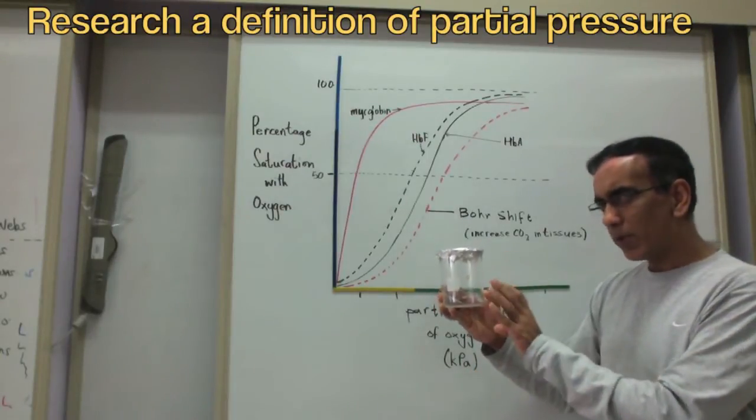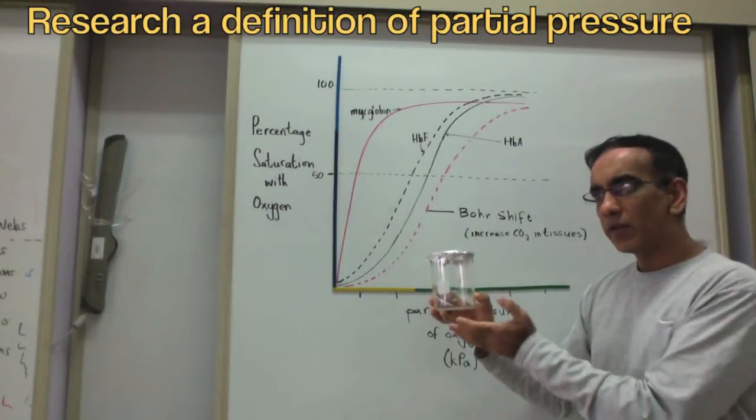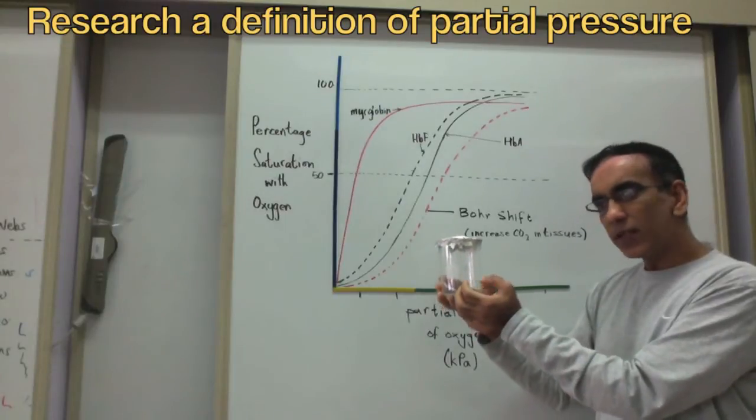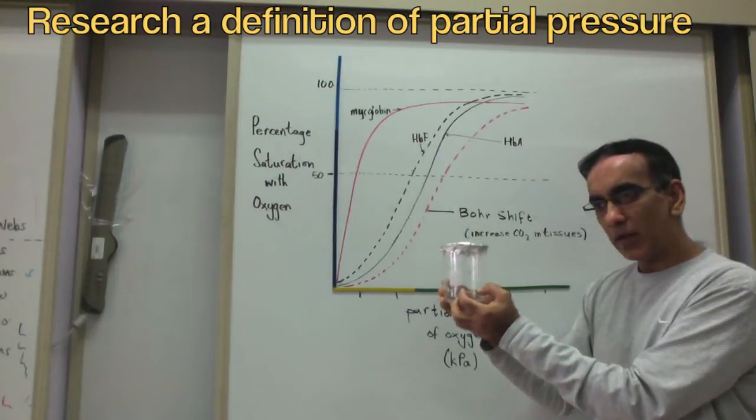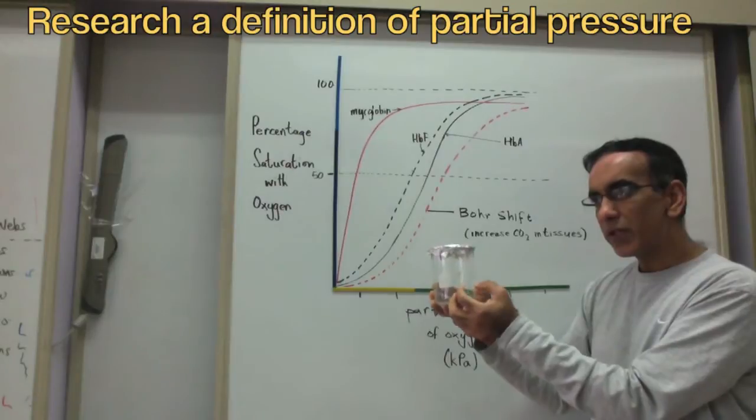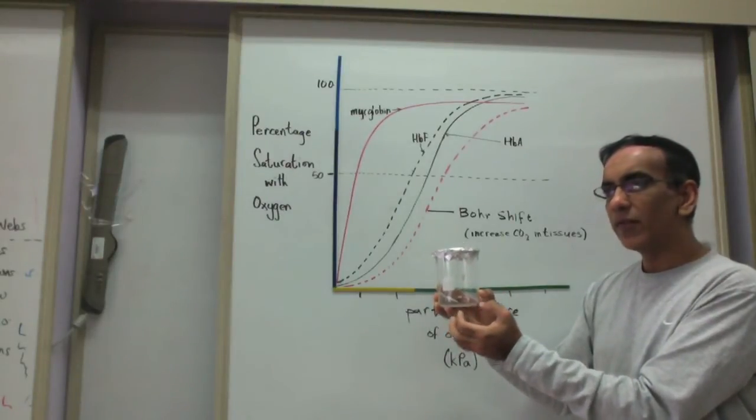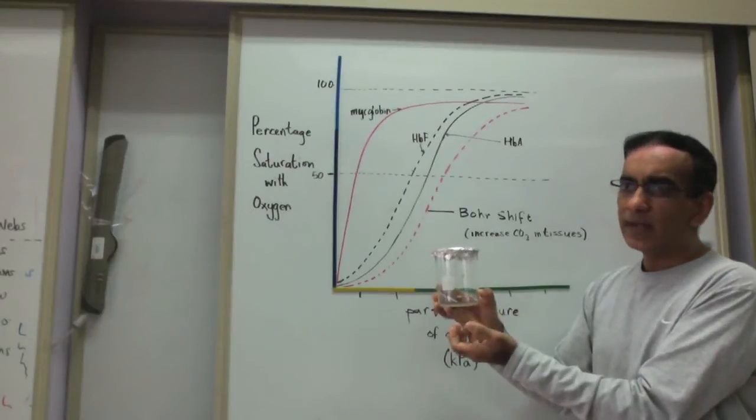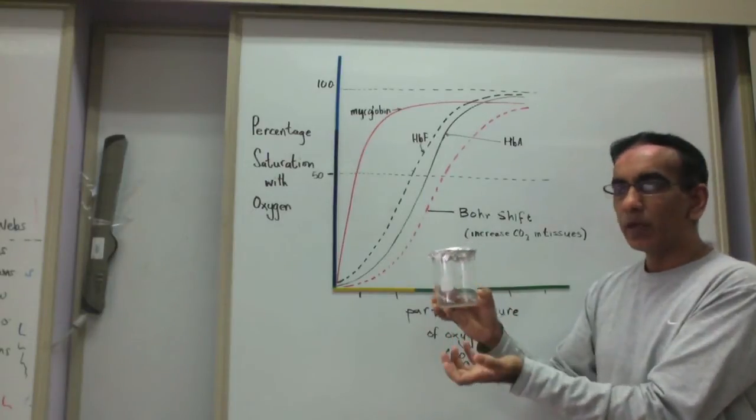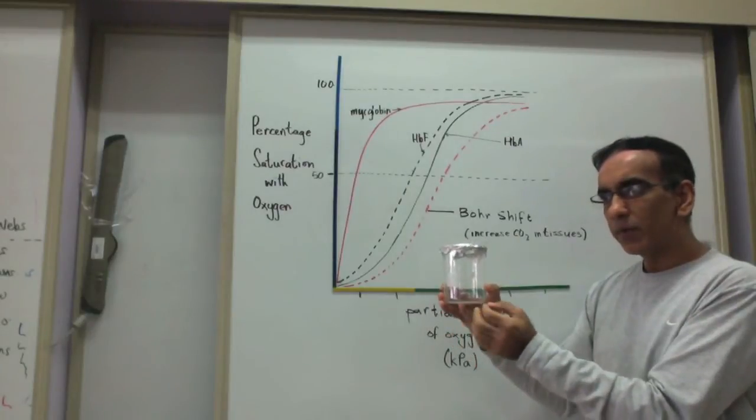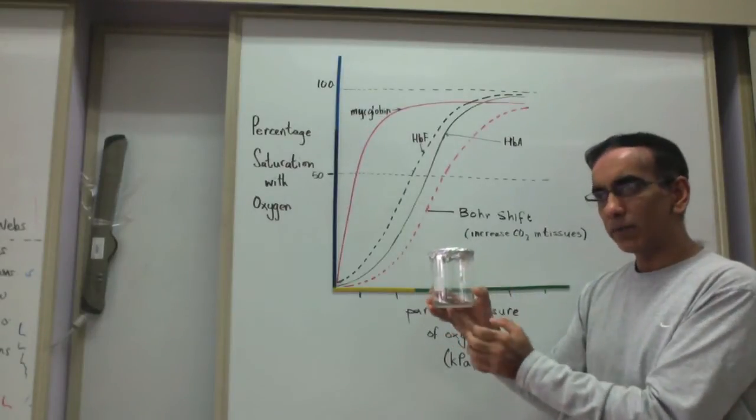If it were possible for me to take away all of the other gases from the inside of this container, and just leave this with 21% oxygen, then the pressure exerted by those oxygen molecules would be just a fraction of the atmospheric pressure. In fact, it would just be 21% of atmospheric pressure. And it is this pressure that is referred to as the partial pressure of oxygen.